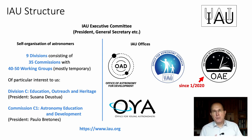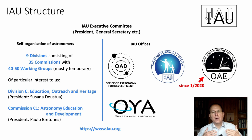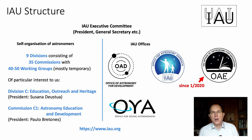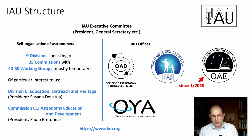That brings us to the right-hand side, because at some point the IAU decided that in order to get things done that require a longer-term commitment, working groups are not the right structure — so that is where the offices come in. Offices have resources, staff that gets paid to do certain things, and they are, at least by their nature, permanent fixtures of the IAU.